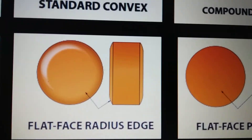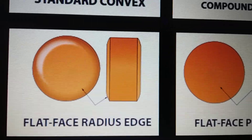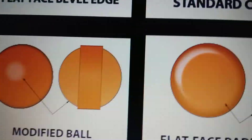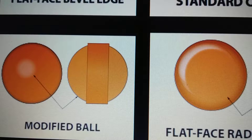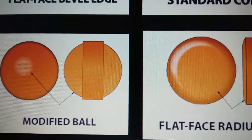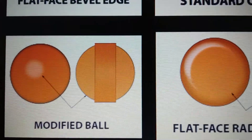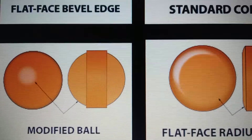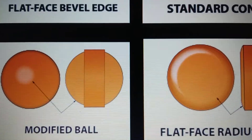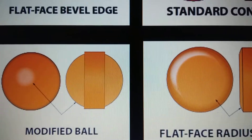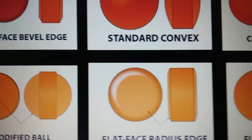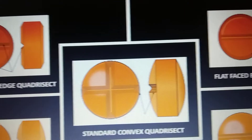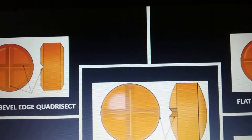Next one is modified ball — again not very common in tablets, but this shape can be seen in the case of toffees. The shape is like a sphere or a leather ball. So now we have seen the different shapes of the tablet depending on its surface characteristics and edges.